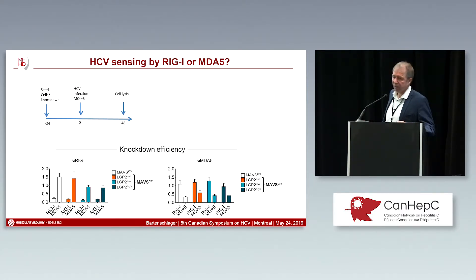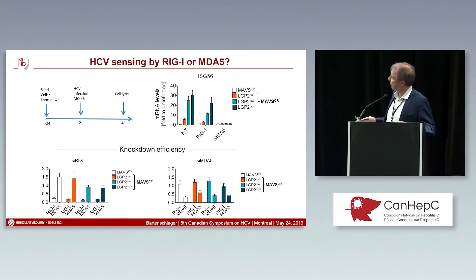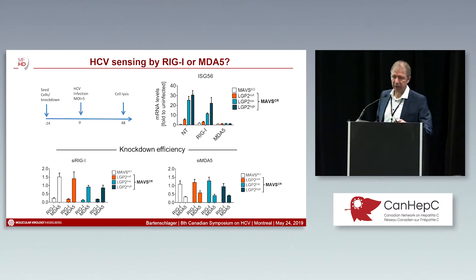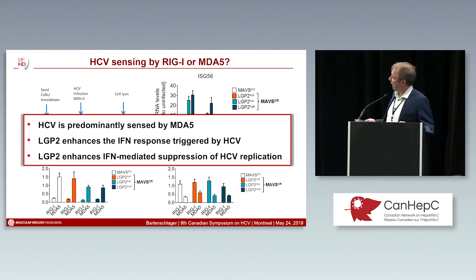The last question was: who is actually sensing the virus — is it RIG-I or is it MDA5? We performed a knockdown of either RIG-I or MDA5 in all these different cells. In cells with only control siRNA and cleavage-resistant MAVS, there is an interferon response that is potentiated in a dose-dependent manner by LGP2. When we knock down RIG-I, there is little effect. However, when we knock down MDA5, the interferon response is gone. So HCV is predominantly sensed by MDA5 and not by RIG-I, which you often read in the literature, and this response is very much enhanced by LGP2.